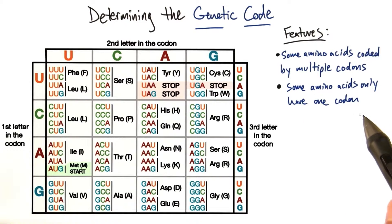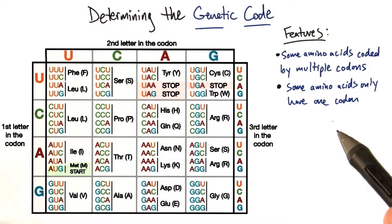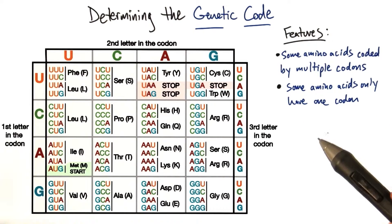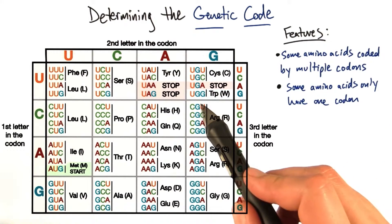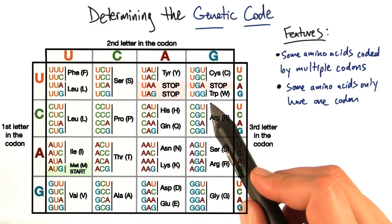Another feature is that some amino acids only have one codon that codes for them. For example, tryptophan just has UGG.